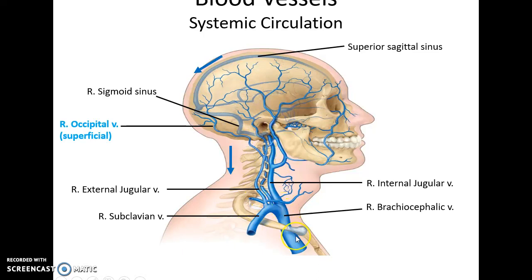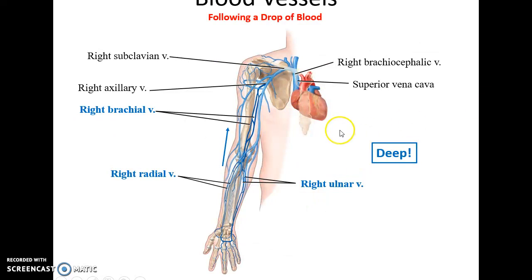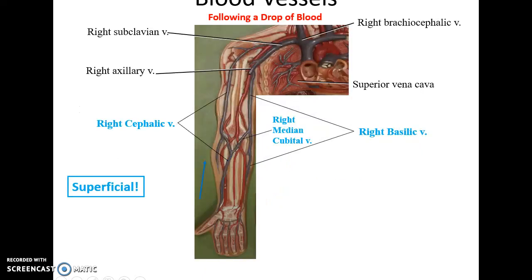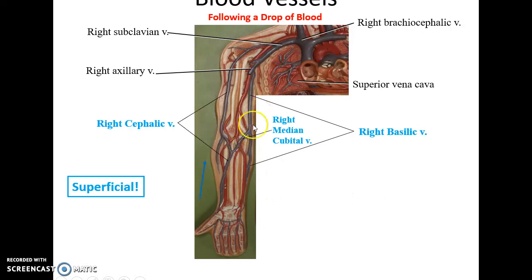The internal jugular vein fuses with the right subclavian vein to become the brachiocephalic vein. From the arms, deep veins include the right radial veins and ulnar veins, which fuse into the brachial veins, entering the axillary vein, then the subclavian vein. Superficially, the cephalic and basilic veins lead to the axillary vein and subclavian vein respectively, and they are connected by the median cubital vein.